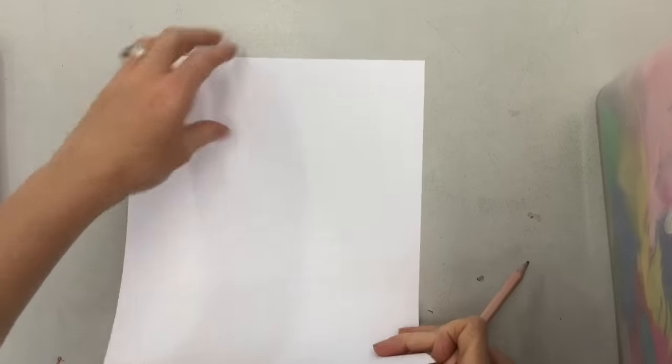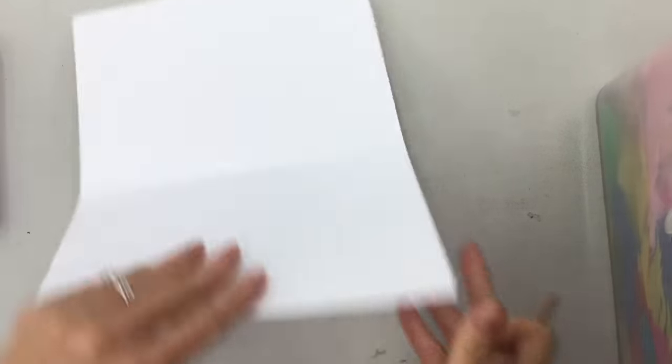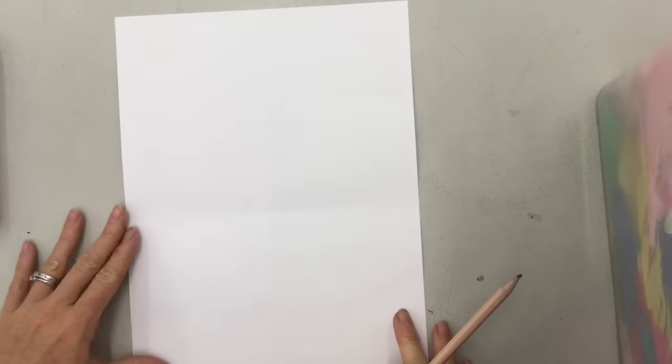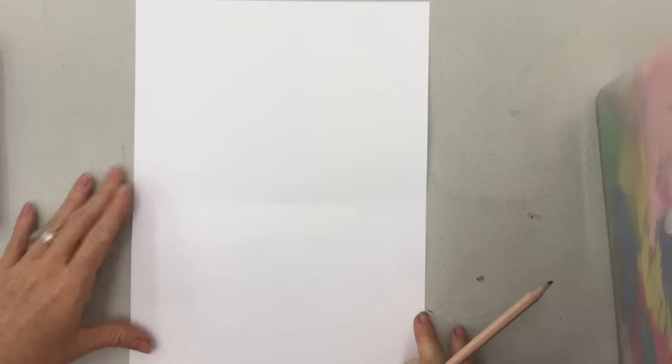So taking your piece of paper now, something I kind of like to do is just fold it in half and just do a little crease right there so you know kind of where the middle is. That helps us out a little bit.